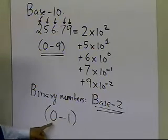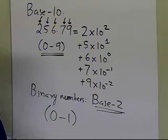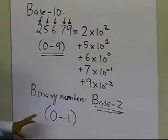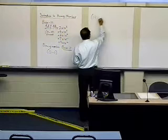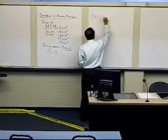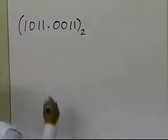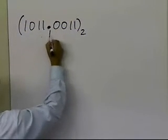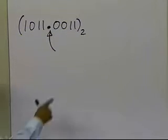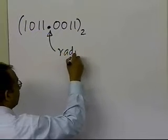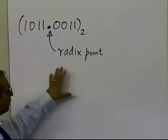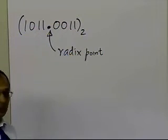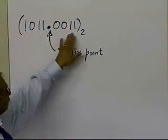So that's why we use base 2 — we have two digits: 0 and 1. Let's look at a number in binary notation and find its base 10 equivalent. Suppose somebody gives you the number 1011.0011 base 2. This dot is no longer called the decimal point — because we're in base 2, it's called the radix point. Whether you're dealing with base 2, base 4, base 8, base 16, or base 10, you call it the radix point, which separates the integer part from the fractional part.